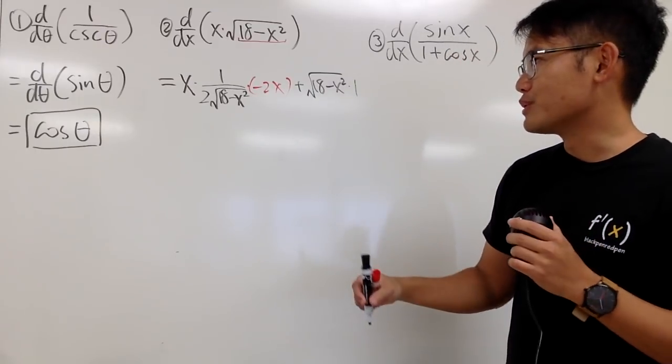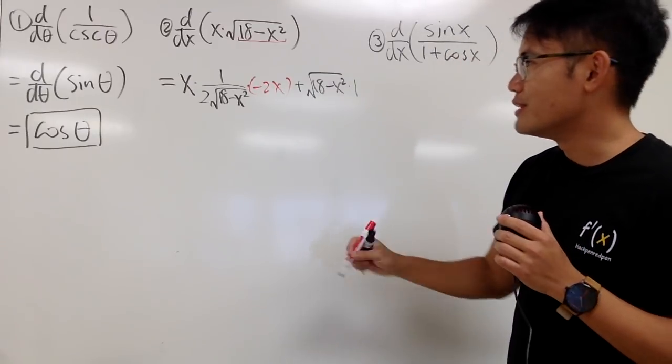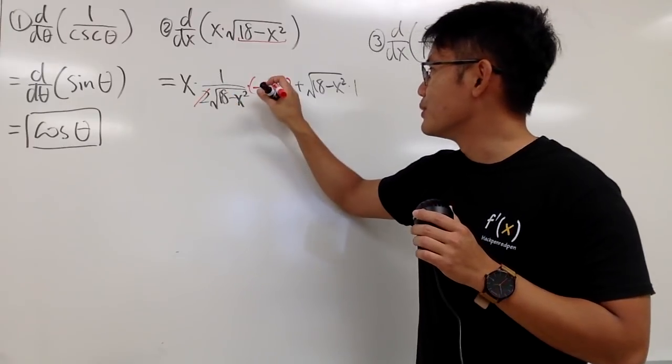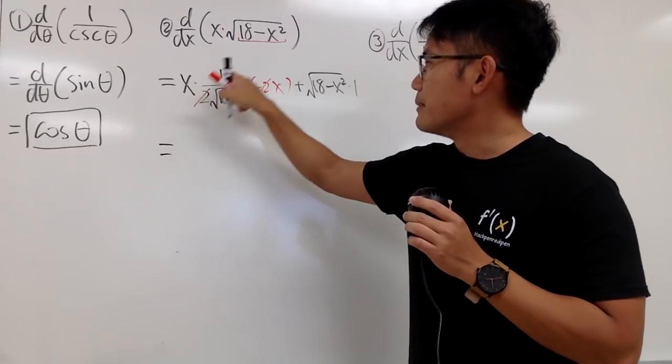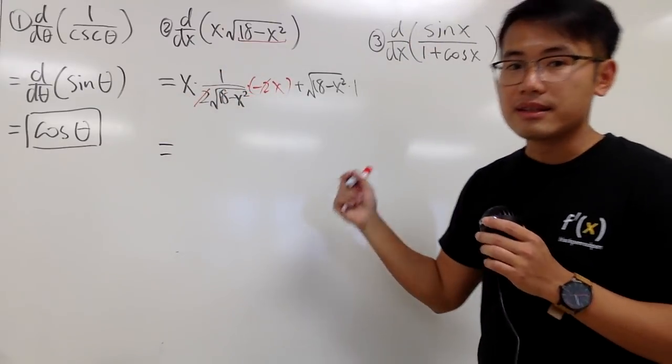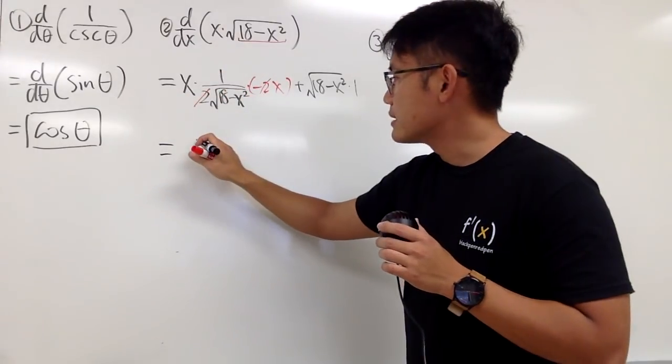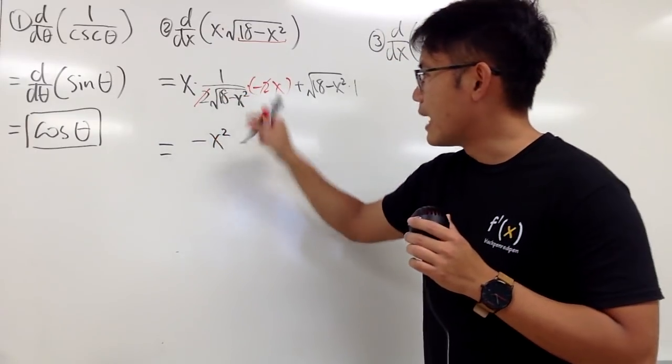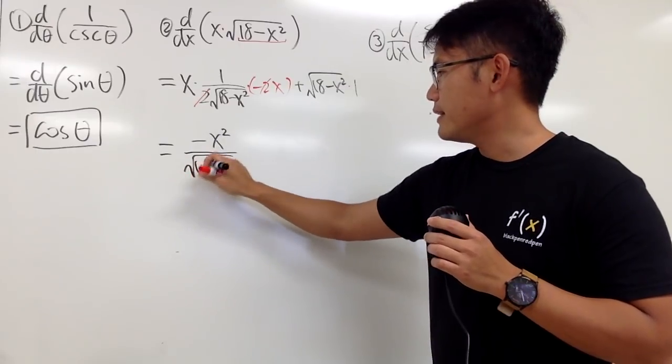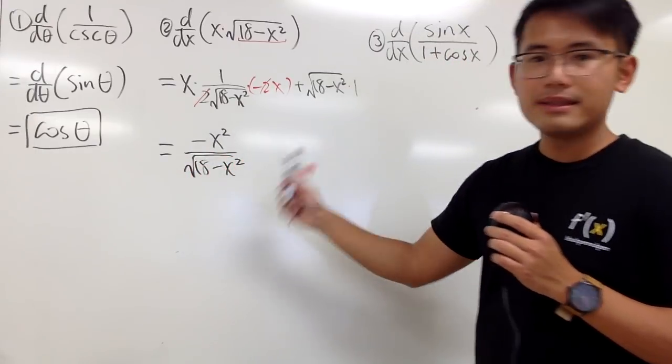So, this is the derivative. And, we're just going to simplify the expressions. First, we see that this 2 and this 2 cancel each other out nicely. And, for the first part, we have x times 1 times negative x on the top. So, that's negative x squared, like that. And then, for the denominator, it's just square root of 18 minus x squared, like that.